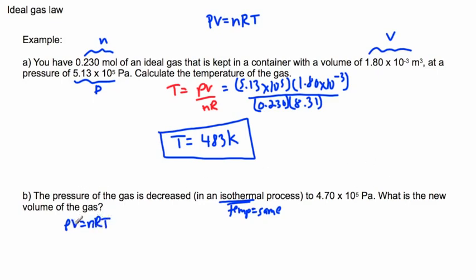The question here is asking, what's the new volume? So now I want to get volume by itself. To do that, I'm going to rearrange this, get V by itself. So V is going to be nRT, but I want to get rid of the P, so the P divides. So it's going to be divided by P. Do I know what to plug in here? Sure, I do. I have V equals n, which is 0.23, times R, which is 8.31, times the temperature, which since it's isothermal, the temperature remain the same, so it's 483, all that divided by the new pressure, which in this case is 4.7 times 10 to the 5.